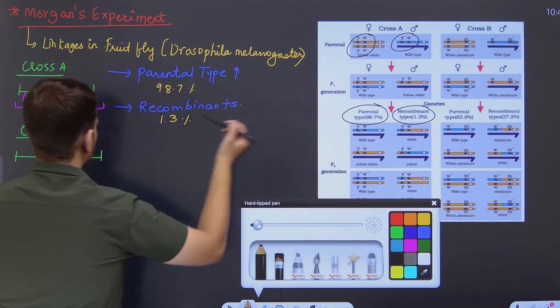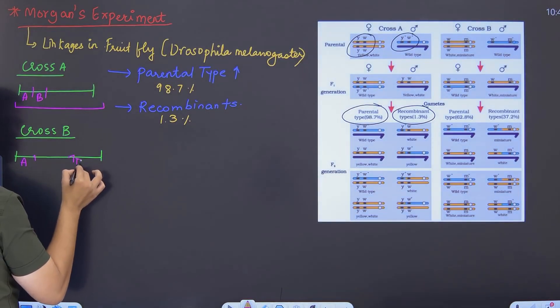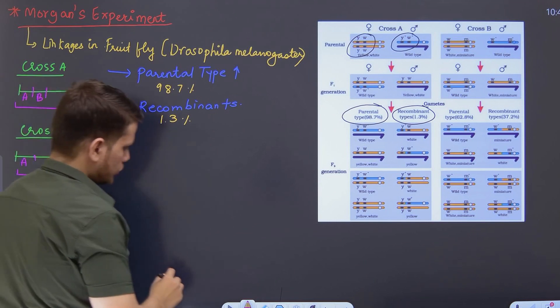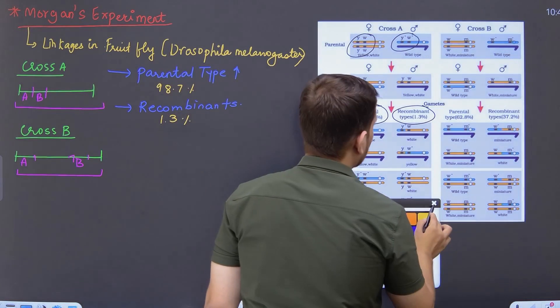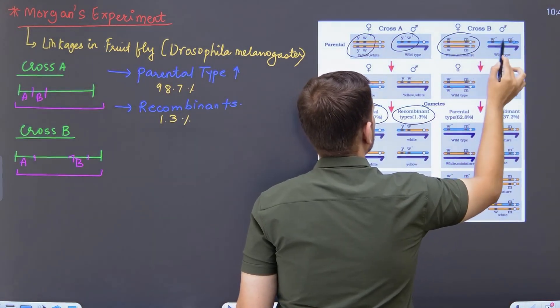In cross B what did he do? He took two genes. One A gene and one B gene. And look at both, they are very far. Look at the gene locations carefully. These genes are very far away from each other. Can you see? The genes are very far away.